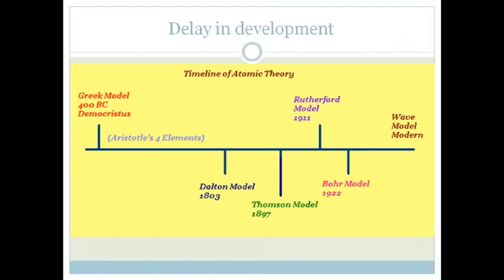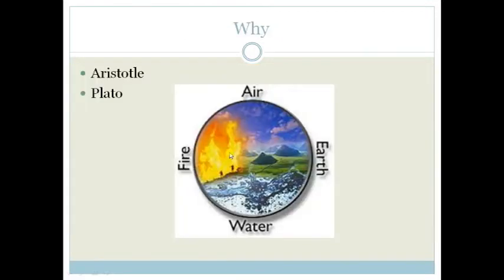Now if you look at the timeline, you will see that there is quite a large delay from the Greek model in 400 BC to 1803 where the Dalton model came through. And there is a very significant reason. The reason is basically based on these two gentlemen, Aristotle and Plato.